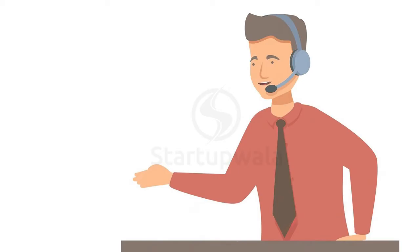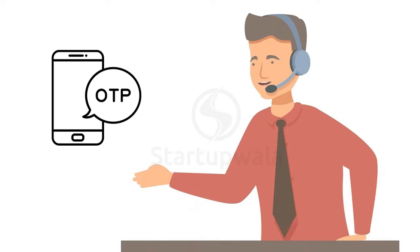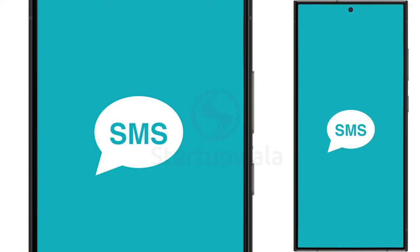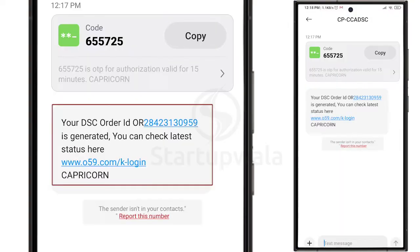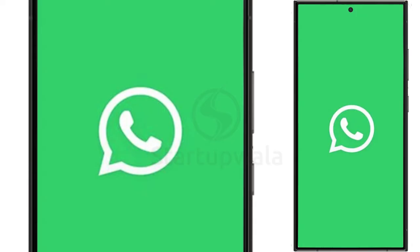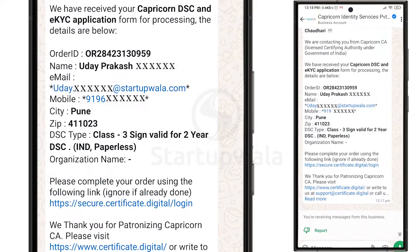Our executive will call you immediately after generating the OTP. Please share the OTP with them to complete the mobile number verification process. You will receive an SMS and WhatsApp message from Capricorn Identity Services confirming that your order ID has been generated.